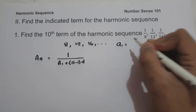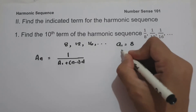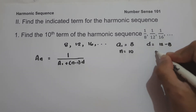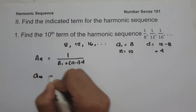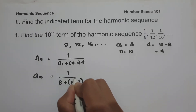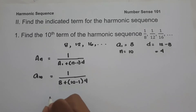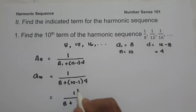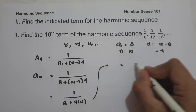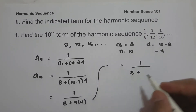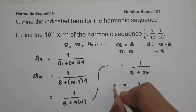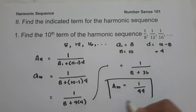So a sub 1 equals 8, n equals 10, and the common difference d equals 12 minus 8 equals 4. Therefore, a sub 10 equals 1 over (8 plus (10 minus 1) times 4) equals 1 over (8 plus 9 times 4) equals 1 over (8 plus 36) equals 1 over 44. The 10th term in the given sequence is 1/44.